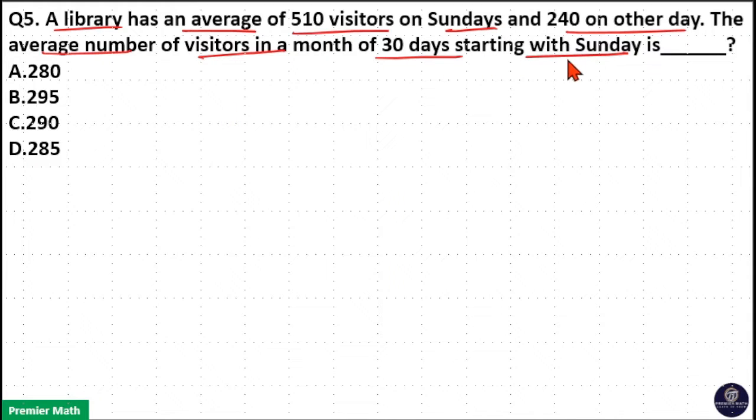Here, starting with Sunday means definitely there are 5 Sundays in that month. That is, if it starts with 1, 1, 8, 15, 22 and 29, these days are Sundays. So, total 5 Sundays.